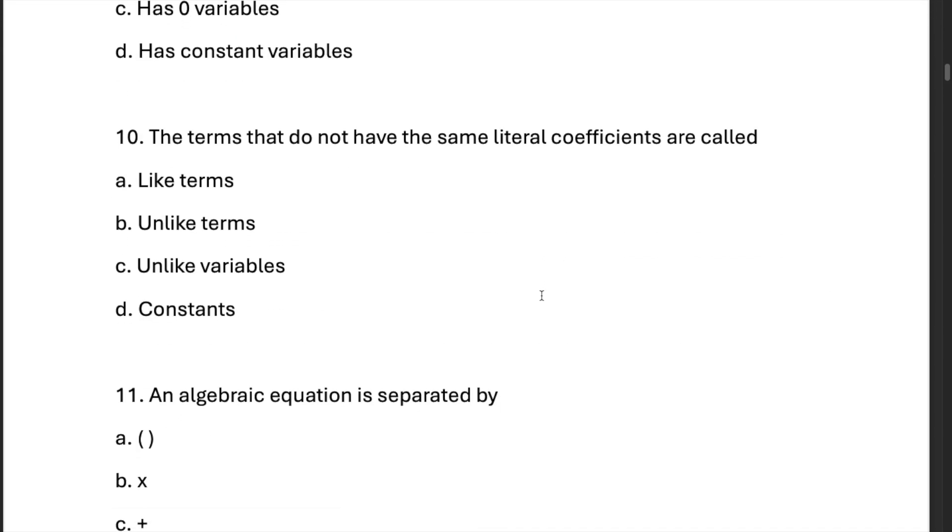The terms that do not have the same literal coefficients are called unlike terms, B.